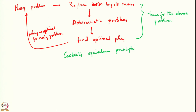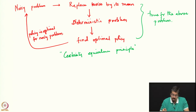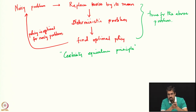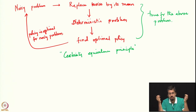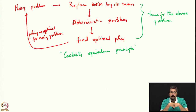This property is known as the certainty equivalence principle: whenever you can take a noisy problem, replace the noise by its mean, solve the deterministic problem, and find that the resulting optimal policy is also optimal for the noisy problem, certainty equivalence is said to hold. It is remarkable that certainty equivalence holds for linear systems with quadratic cost. This has tempted researchers to conjecture that certainty equivalence might hold more generally across all sorts of problems.